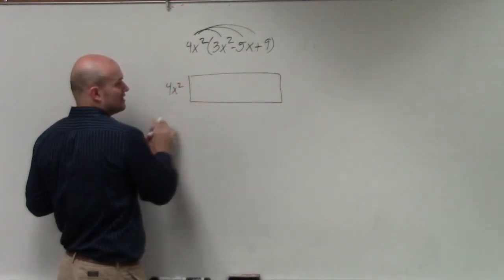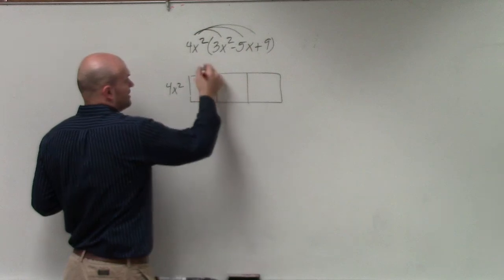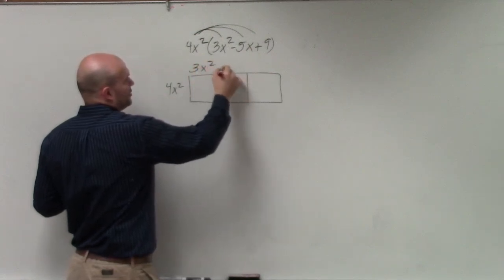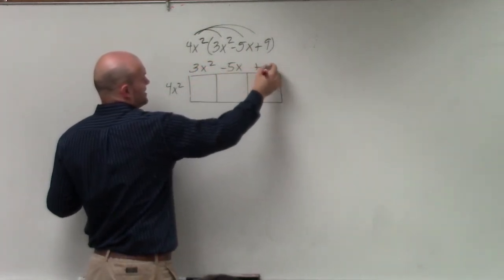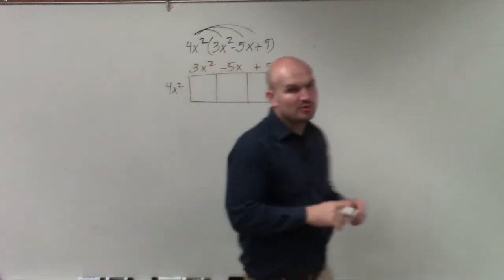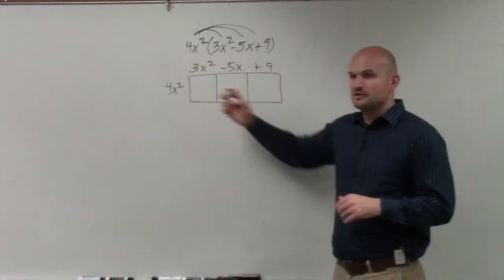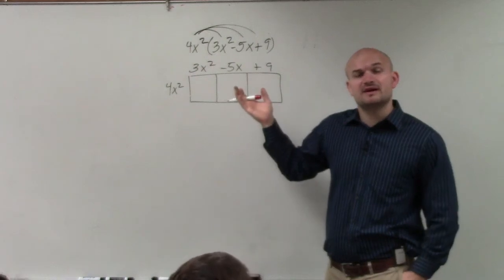You can treat 4x² as one side, and the trinomial as the other side of a rectangle. If you break it up, you can see there's three little boxes, and all we need to do is find the area.